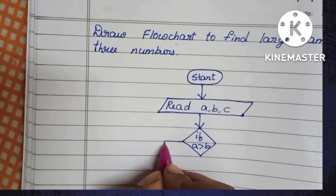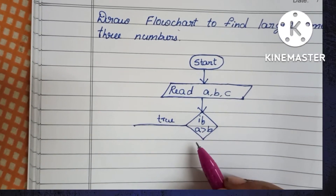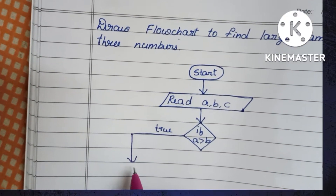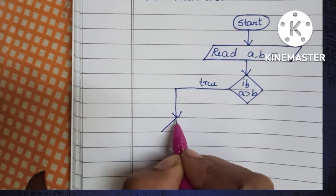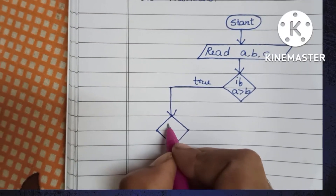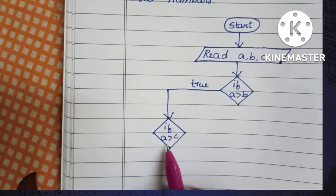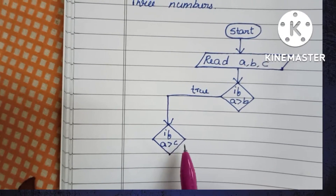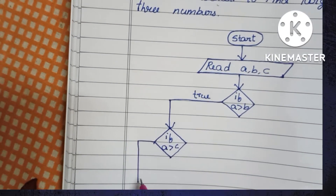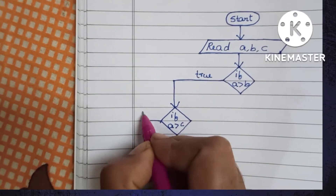If this condition is true, A is the greater number between A and B. So we have to compare A with C to find which one is greater. If A is greater than C and this condition is true, A is greater than both B and C, so we print A is largest.